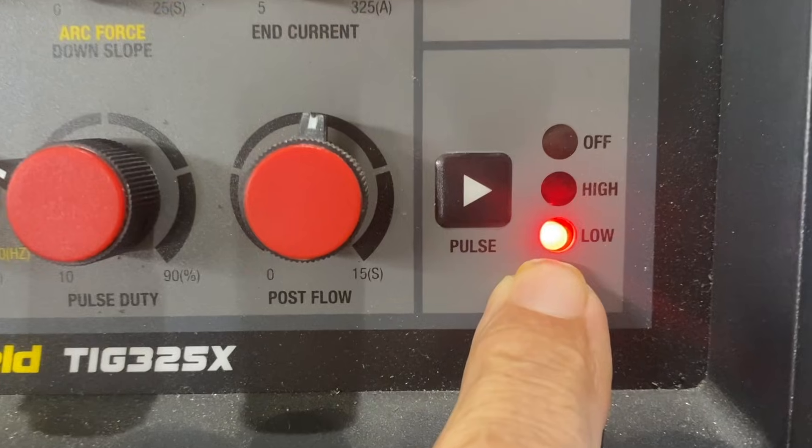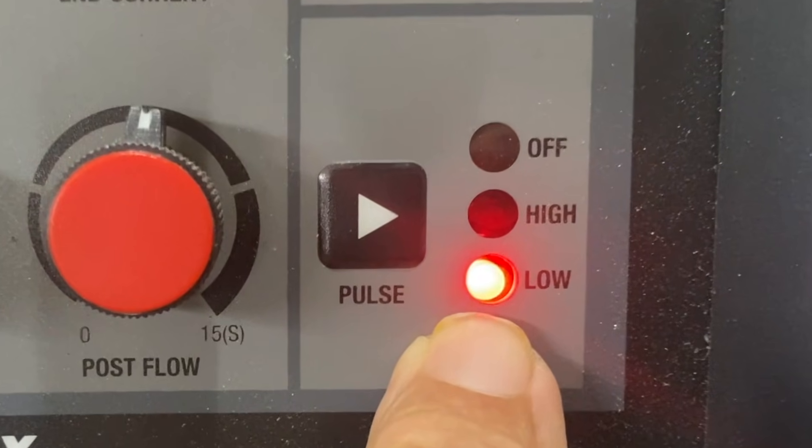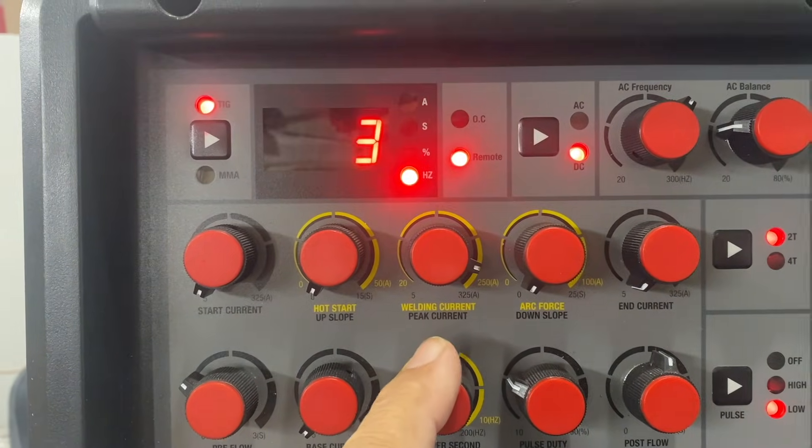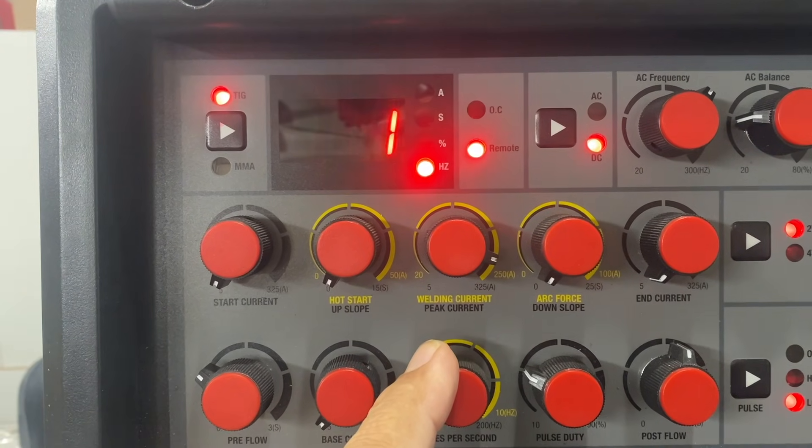I'm using the PrimeWeld TIG 325X, got the pulse rate on low and then setting the pulses per second on one.